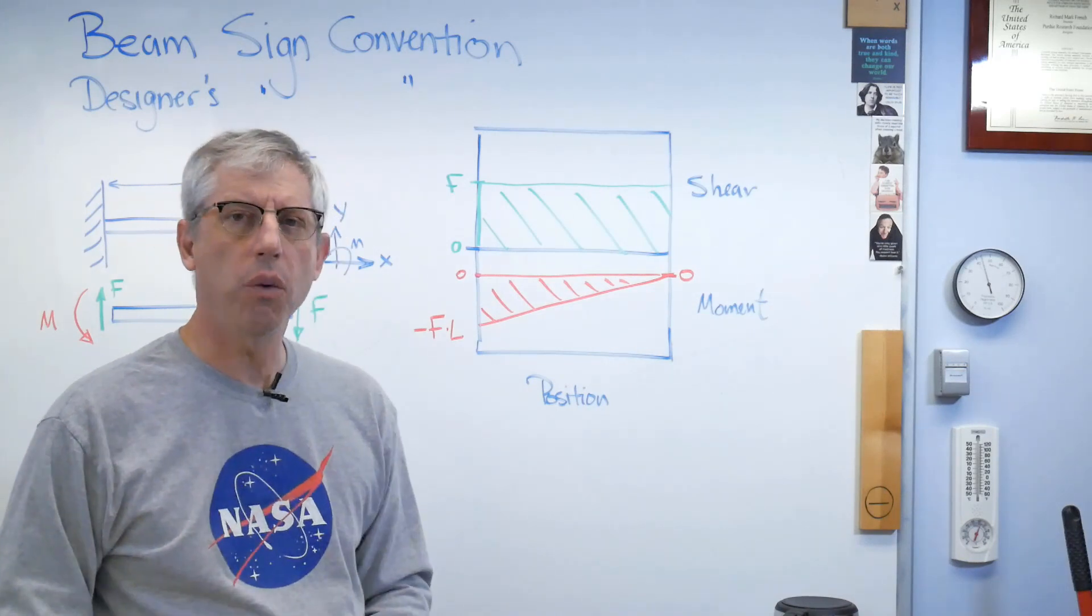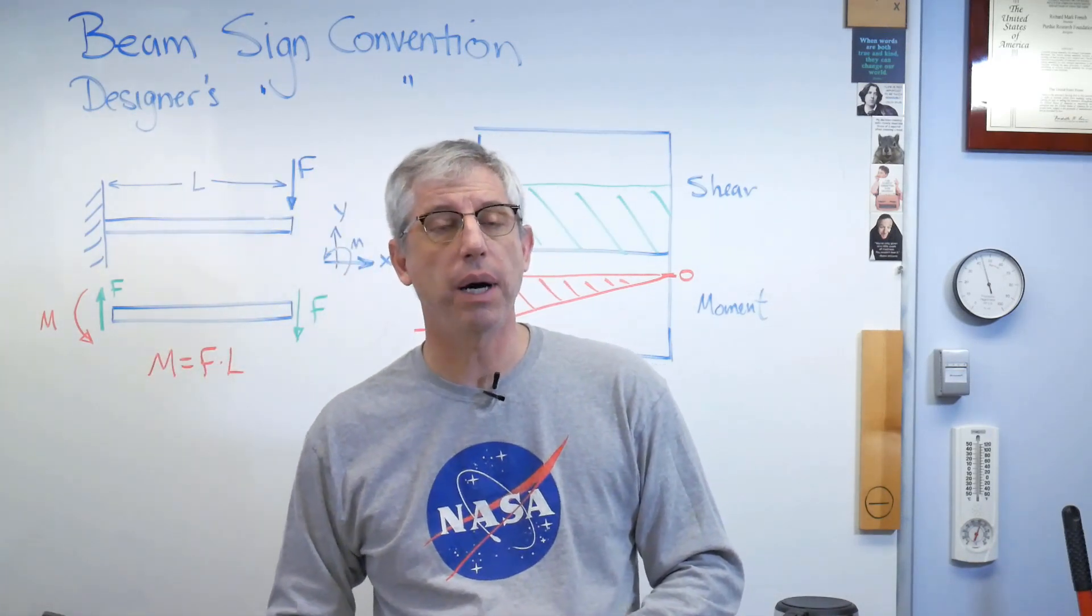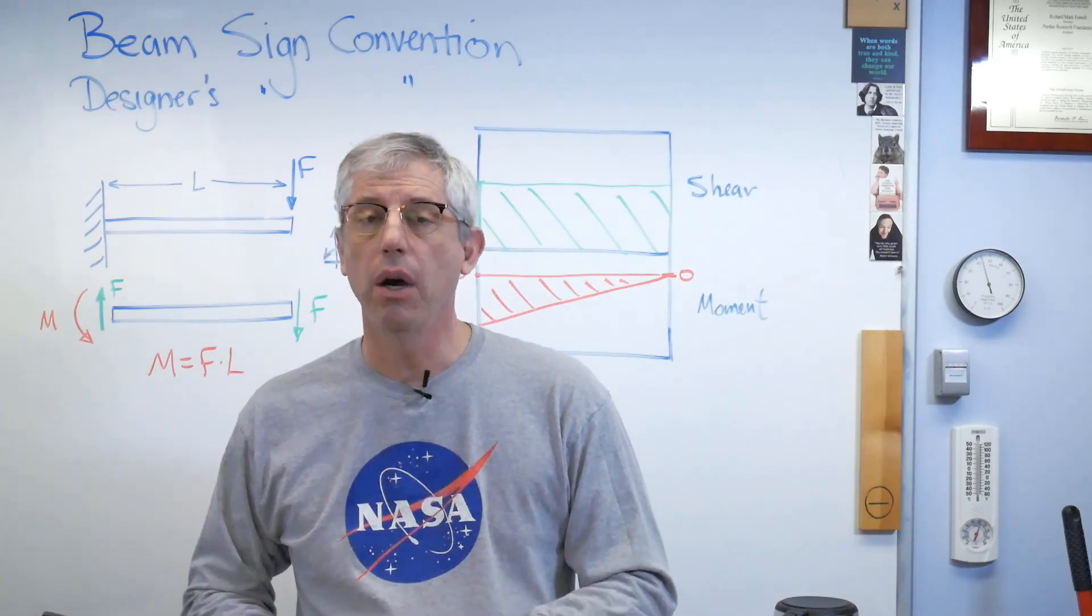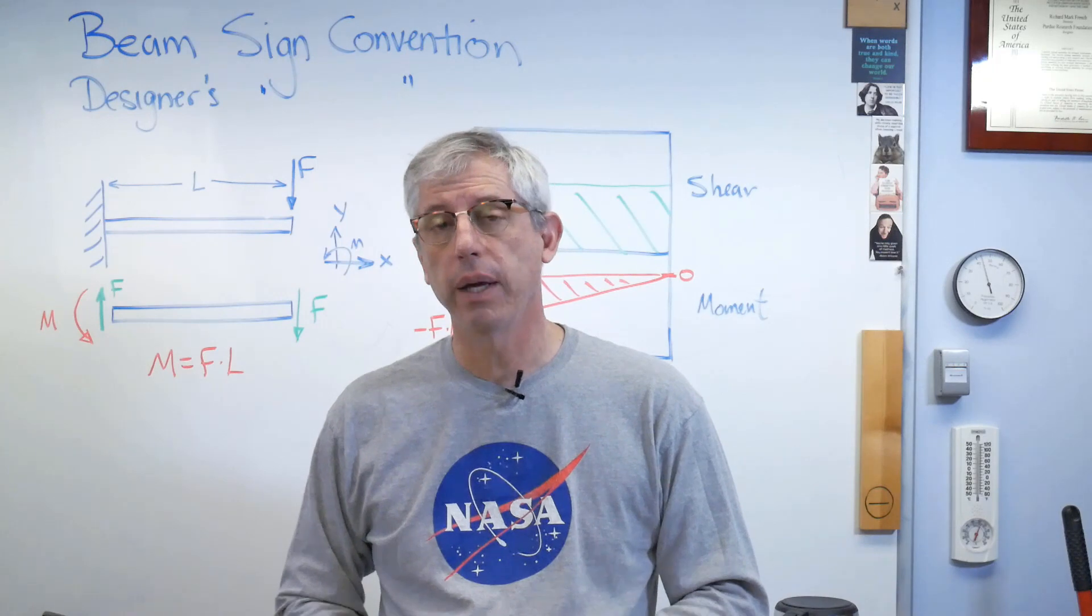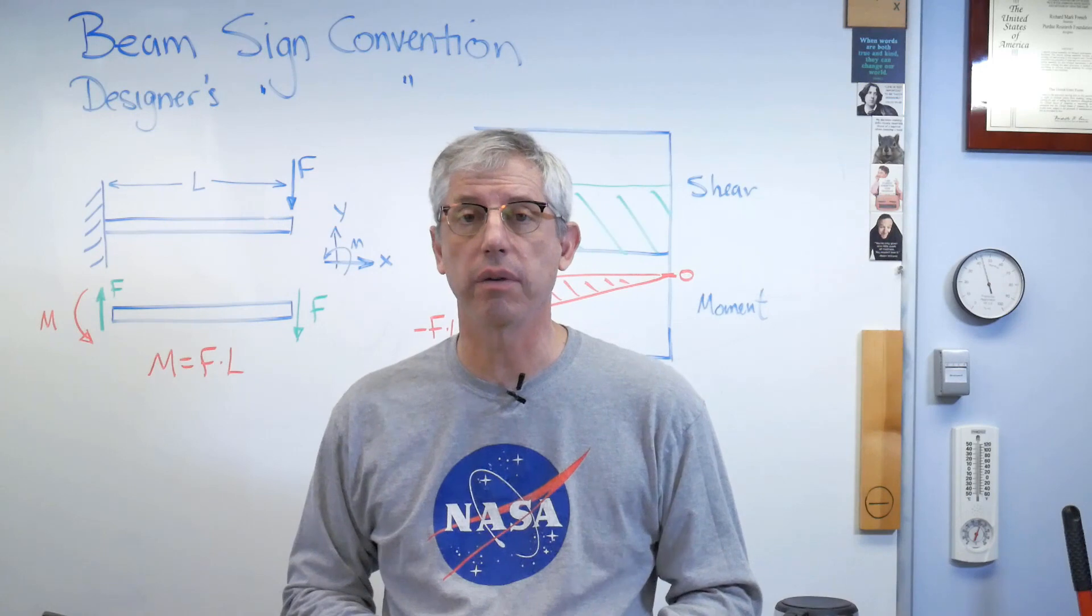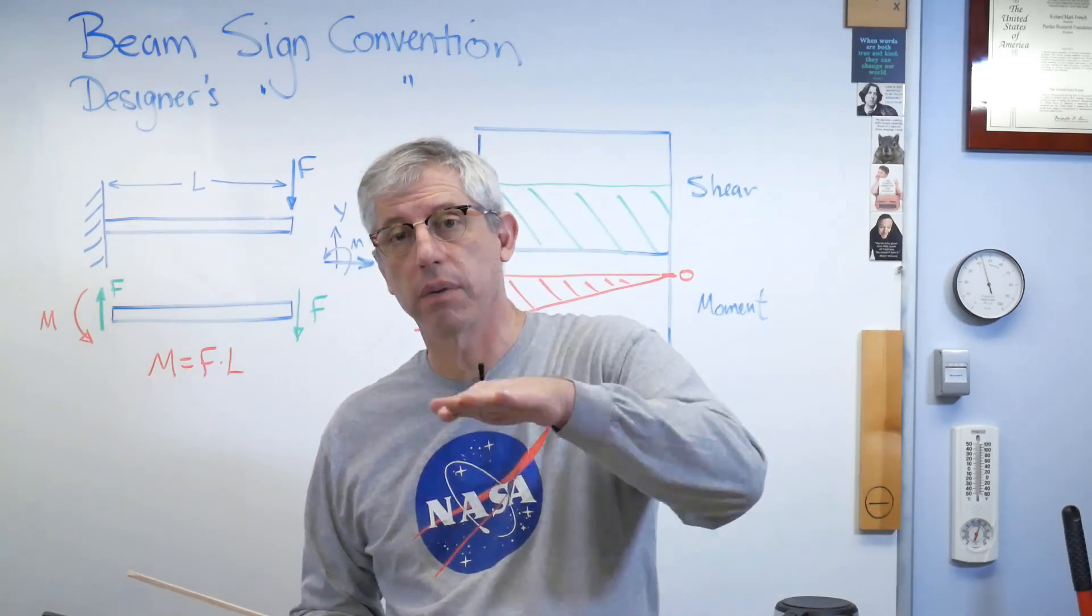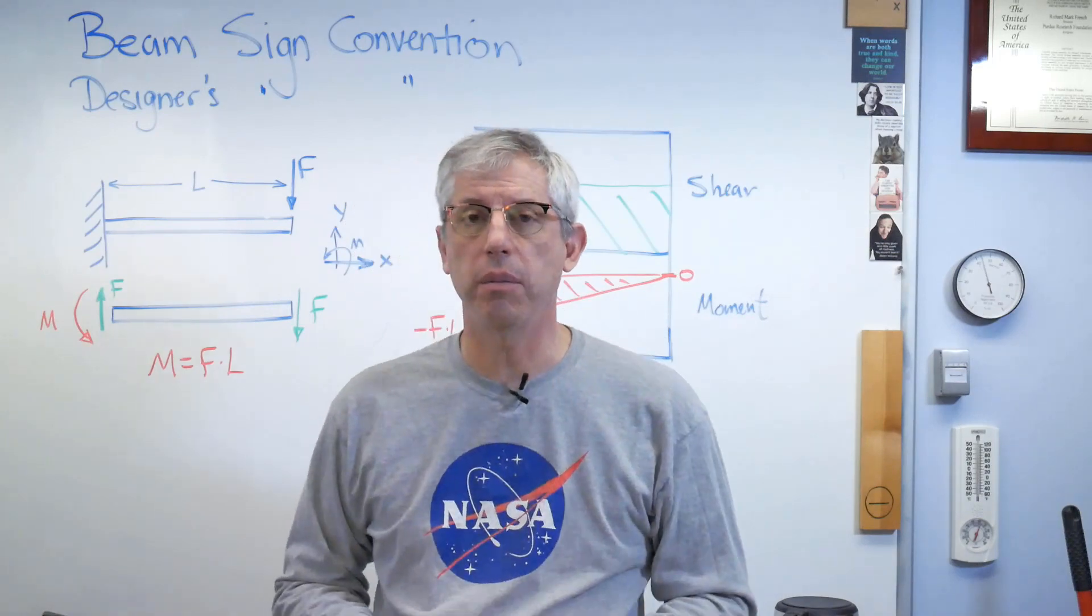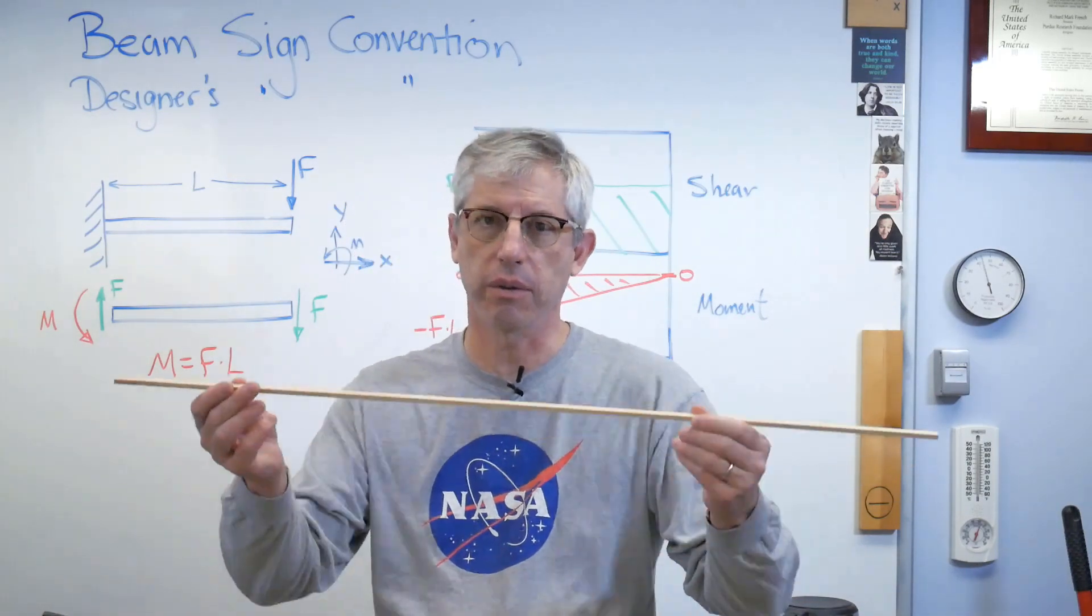So we've got to figure out what's positive and what's negative according to the beam sign convention. And the positive and negative moments are defined around what's positive and negative curvature. If you've had a calculus class, you know that curvature is the slope of the slope. It's the second derivative of position. And if you've got it going up in the ends and down in the middle, that's positive. Well, here's a beam. Well, it's a stick, but I'm in a state school, so here's a stick.